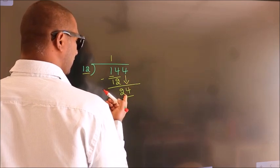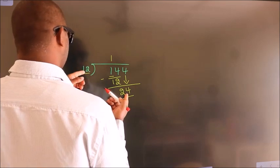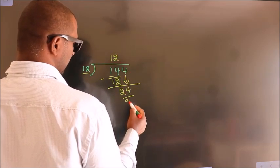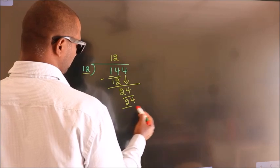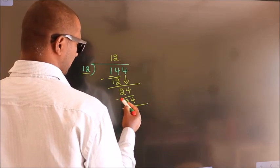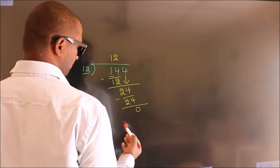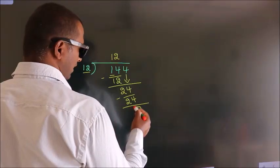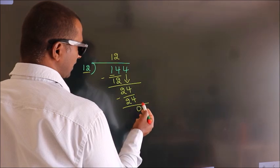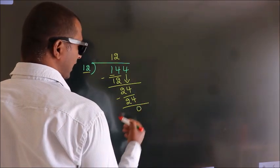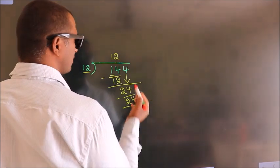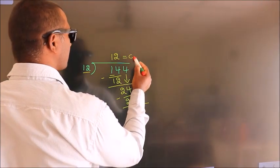When do we get 24 in the 12 table? 12 twos are 24. Now we subtract. We get 0. After this, there are no more numbers to bring down. And we got remainder 0. So this is our quotient.